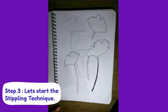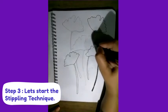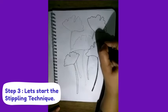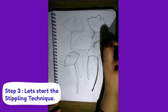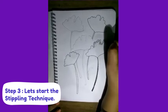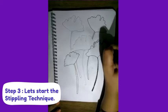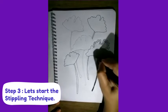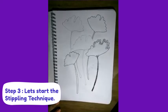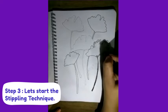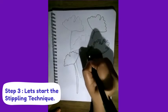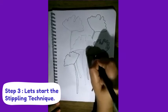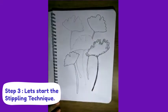Close to the petal, we will give dots. This is what is stippling - dense dots close to the outline of the petal, all around, close dots.